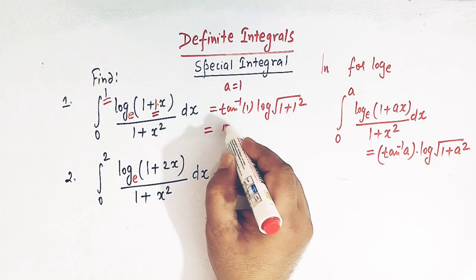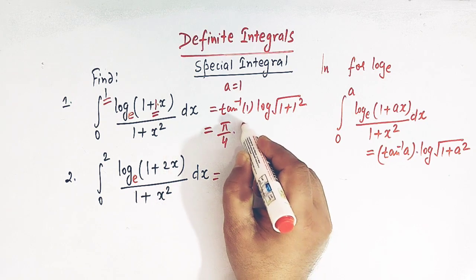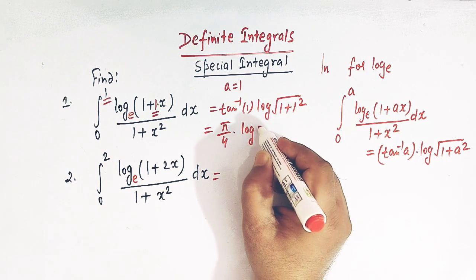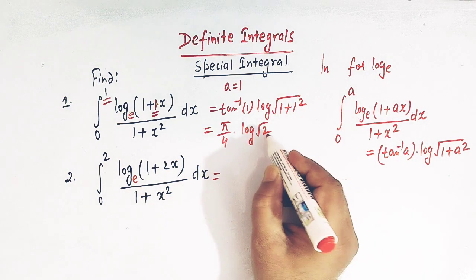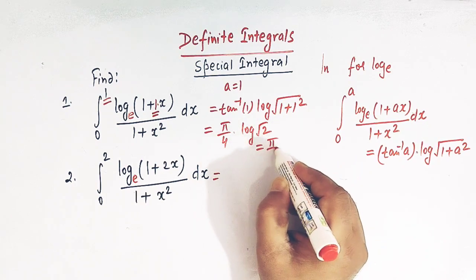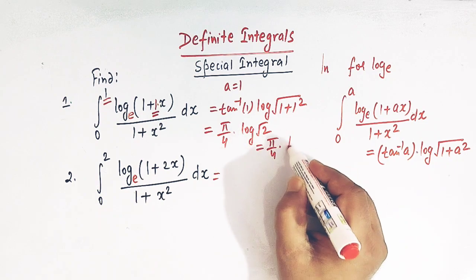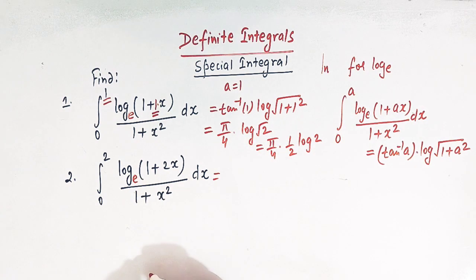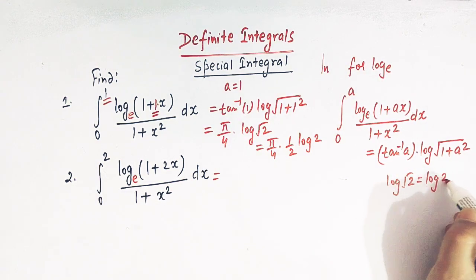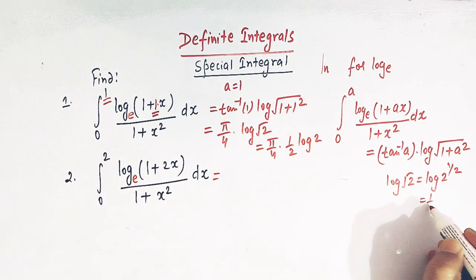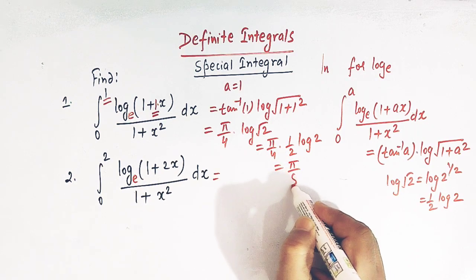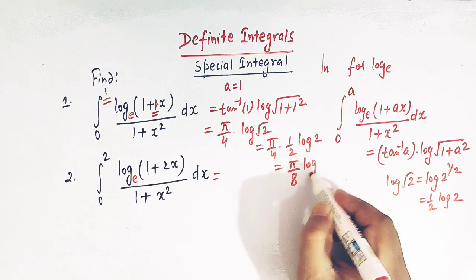Arctan(1) is simply π/4, and here we have log of the square root of 1 + 1 squared, which is the square root of 2. Applying the property of log, log(√2) = log(2^(1/2)) = (1/2)log 2. So the result becomes π/4 times (1/2)log 2, which gives π/8 · log 2.